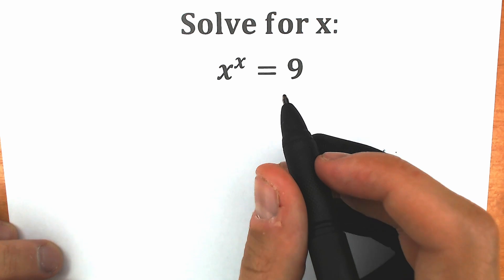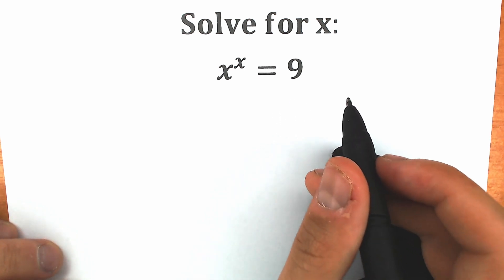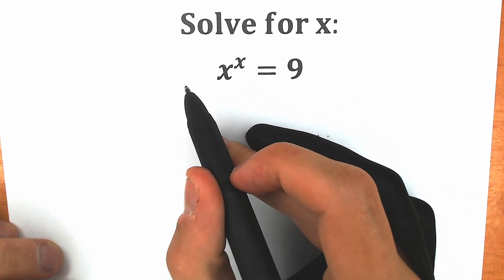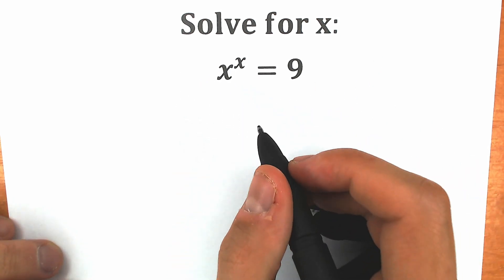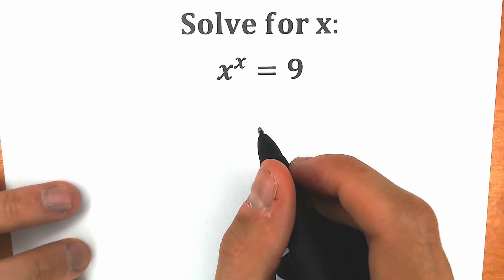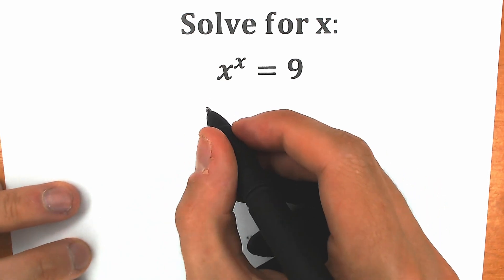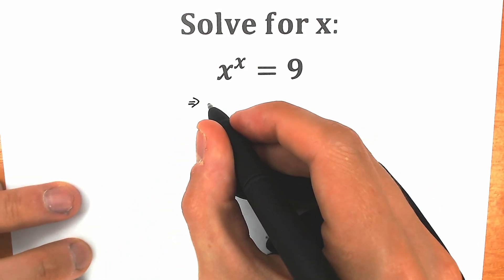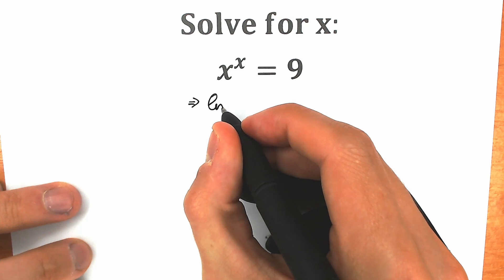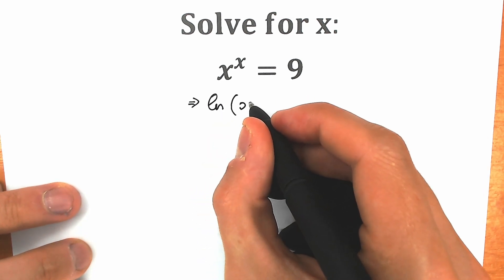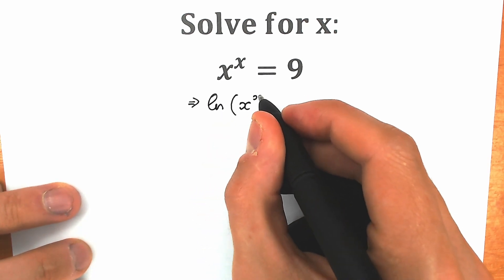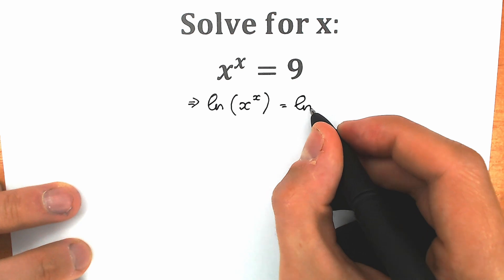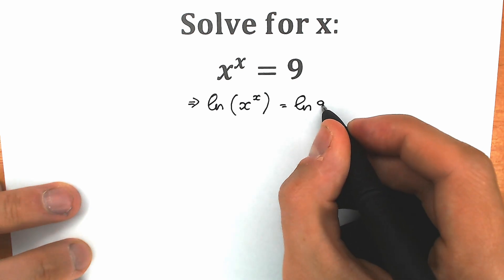So first of all, let's apply the natural log on both sides. We have our power, and when we apply it, this x will come down, simplifying our expression a lot. So the first step: we apply natural log on the left side — natural log of x to the x — and natural log on the right side — natural log of 9.